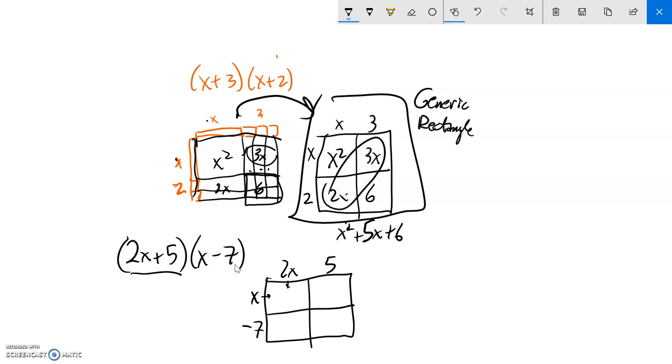So 2x times x is 2x squared. And then if I get here, 5 times x is 5x. If I get here, 2x times negative 7, negative 7 times 2 is negative 14x. And then here, 5 times negative 7 is negative 35.